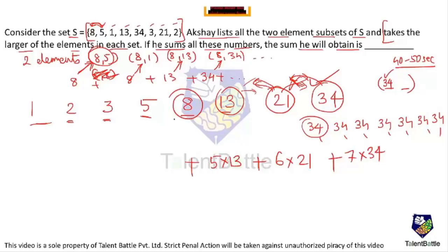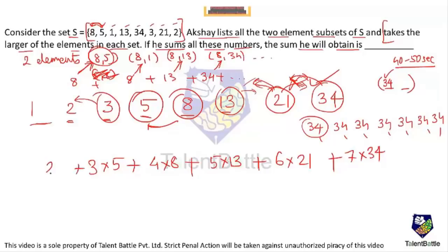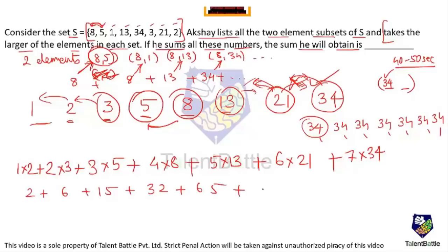Continuing: 8 is the largest in 4 subsets (4 × 8 = 32). 5 is the largest in 3 subsets (3 × 5 = 15). 3 is the largest in 2 subsets (2 × 3 = 6). 2 is the largest in 1 subset — {2, 1} — contributing 1 × 2 = 2. Adding all: 238 + 126 + 65 + 32 + 15 + 6 + 2 = 484.